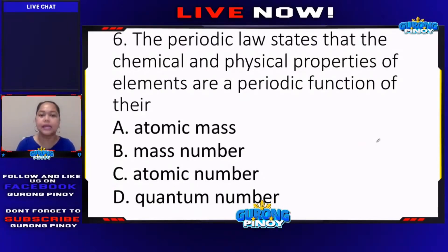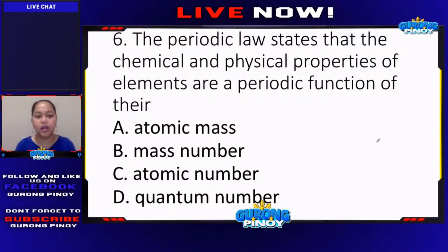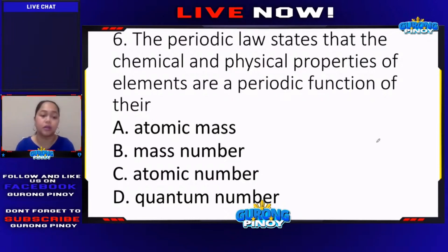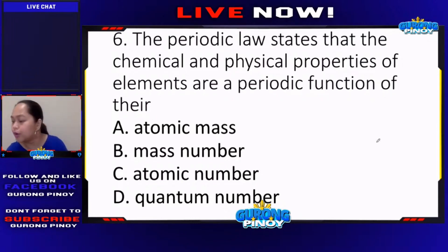The periodic law states that the chemical and physical properties of elements are a periodic function of their — is it: letter A, atomic mass; letter B, mass number; letter C, atomic number; or letter D, quantum number?